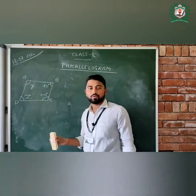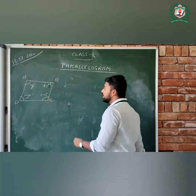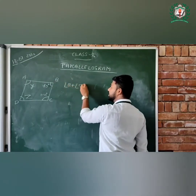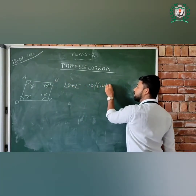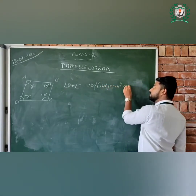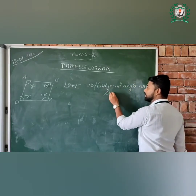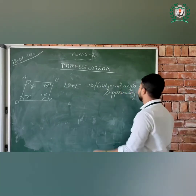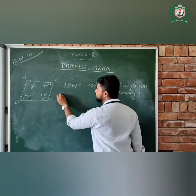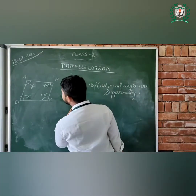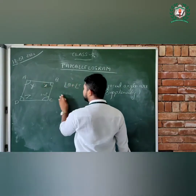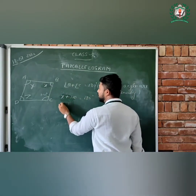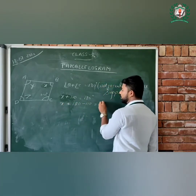We know that angles B and C are adjacent angles, so angle B plus angle C equals 180 degrees, because adjacent angles of a parallelogram are supplementary. Angle B is 70 degrees, so let angle B equal X. With angle C equal to 110, we get X equals 180 minus 110, which equals 70. So X equals 70 degrees.